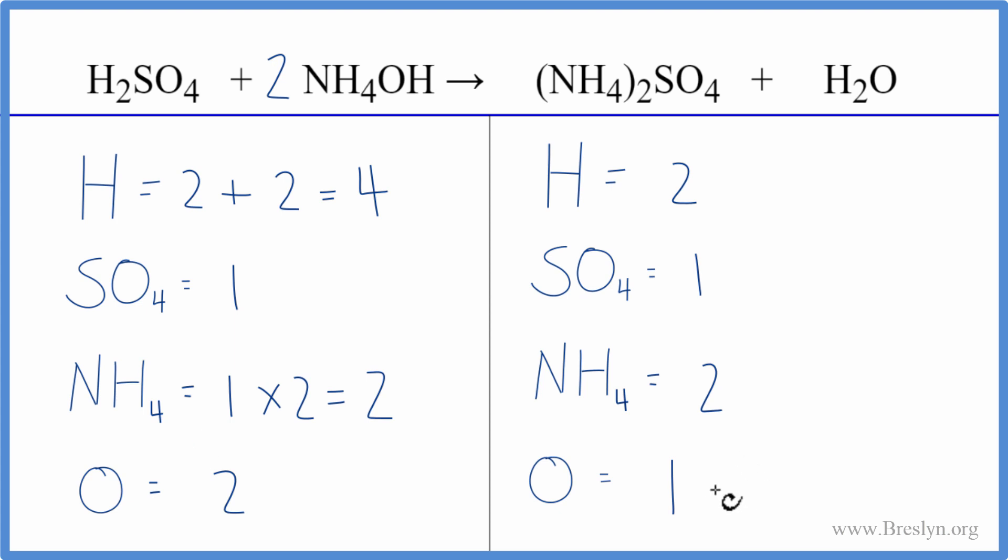It looks like at this point, if I put a two in front of the H2O, two times two, that'll give me four. So those are balanced. One times the two, that gives me two. And we're done. This equation is balanced.